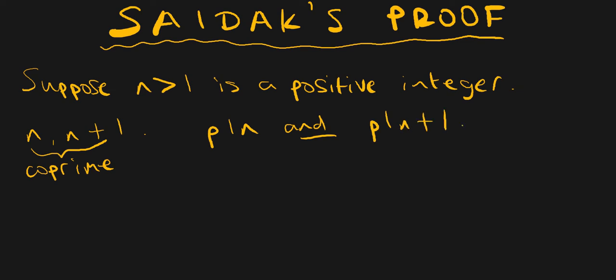Now if p divides n and p divides n plus one, then p must also divide the difference between these two numbers. So p must also divide n plus one minus n — that's the difference between these two numbers.